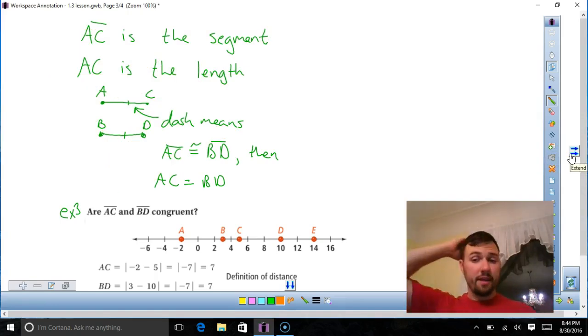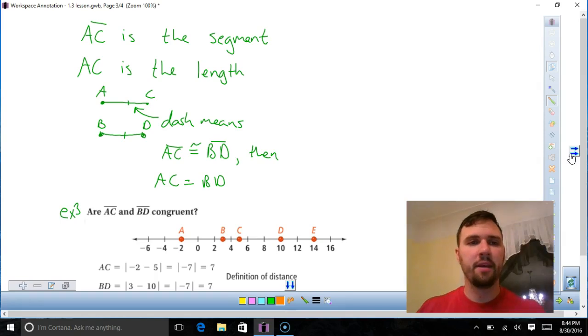All this says is, we talked about naming a line earlier. AC is a line segment, right? That has an A and a C, and there's a line in between. So if I put that line on top, I'm talking about the physical line itself. If you do not put the line on top, you're looking for the length. So that's a number. AC with a line on top is an actual physical line. AC with no line on it is a number.